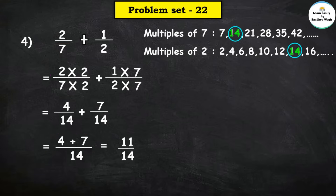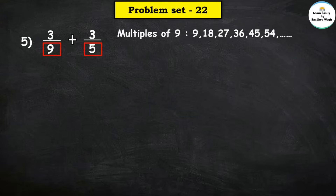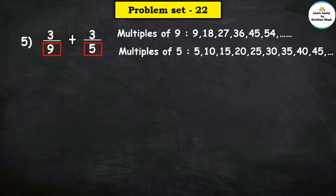So the final answer is 11 upon 14. Next: 3 upon 9 plus 3 upon 5. The denominators are 9 and 5. Find the multiples of 9 and multiples of 5 to get the common multiple.